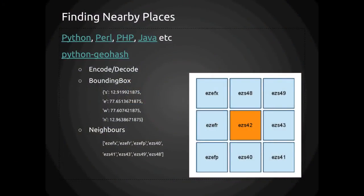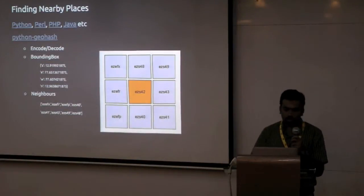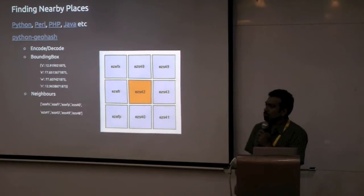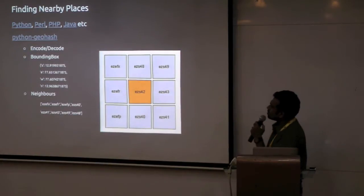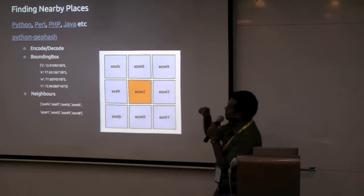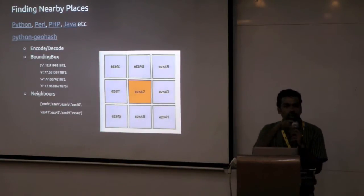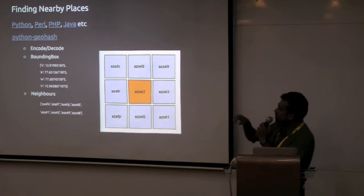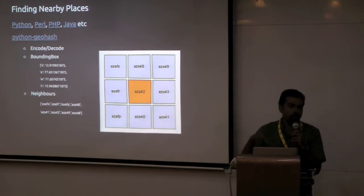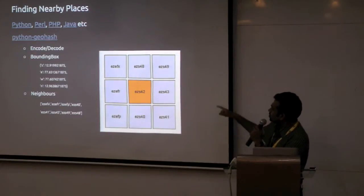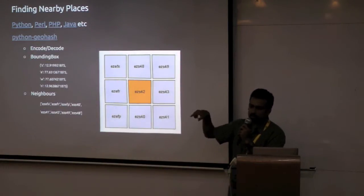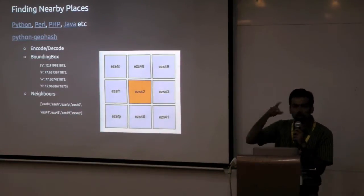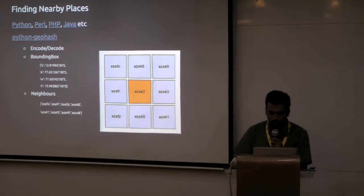Most languages have libraries for accessing GeoHash — doing encoding, decoding, finding bounding boxes, finding nearby neighbors. For example, if I give a particular geohash and ask for the bounding box, it gives me the lat-long of all the corner points. If I do just neighbors, it tells me all the nearby geohashes. And if I do an expand, it gives me all the neighbors including the cell I am talking about.